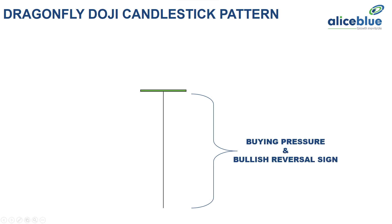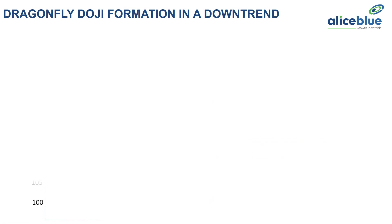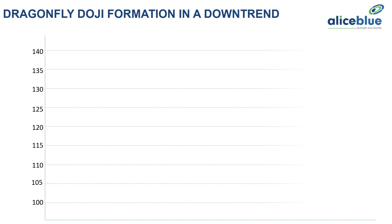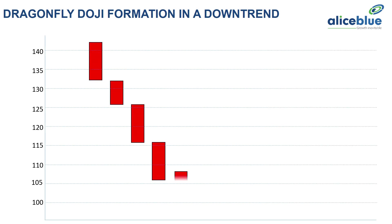If the pattern is formed in a downtrend with a key level support or in a demand zone, it simply signifies the price is getting a pullback from the demand zone or support level. This pattern shows the Dragonfly Doji candlestick pattern formation in a downtrend and how we can take execution by using the candlestick pattern as a confirmation.